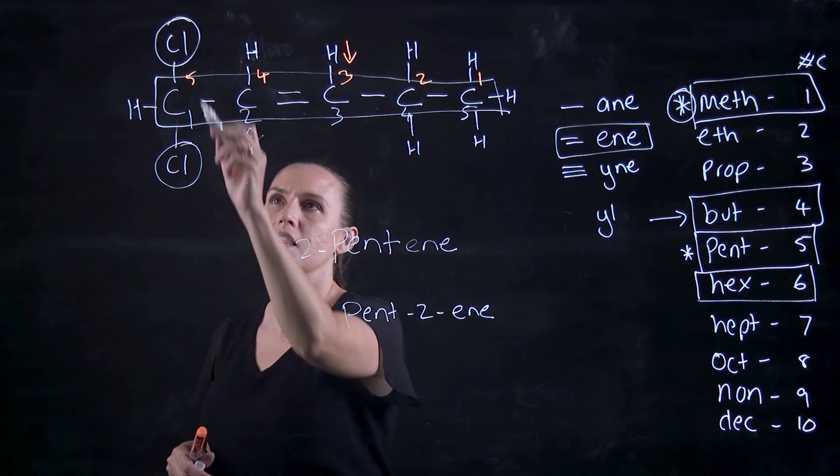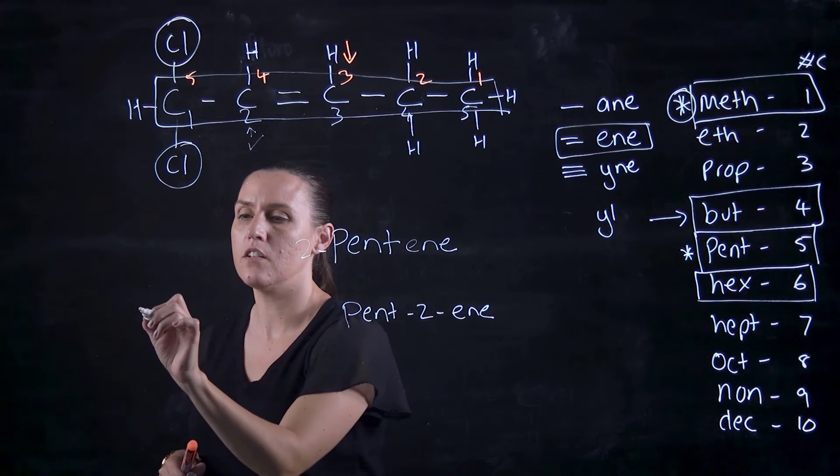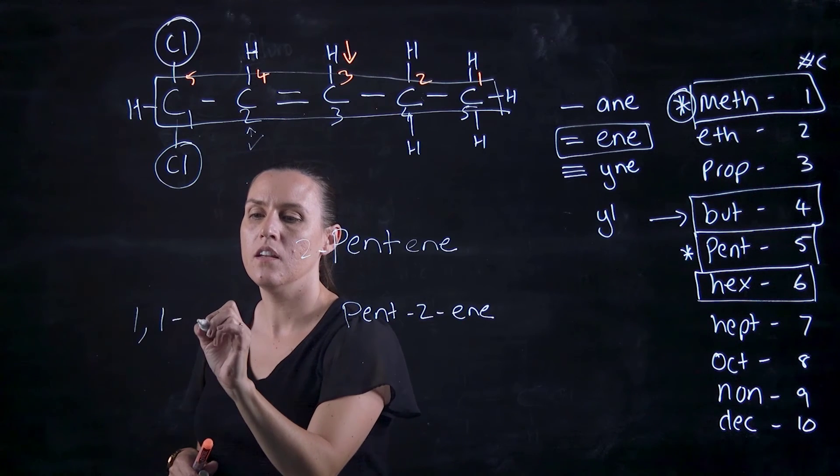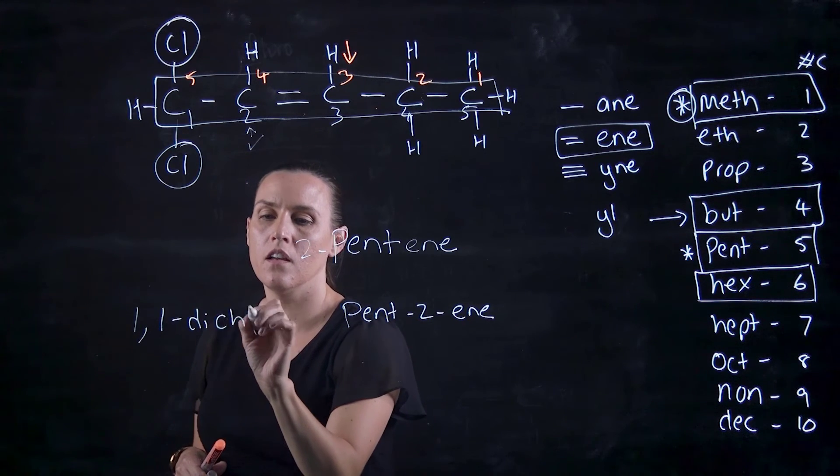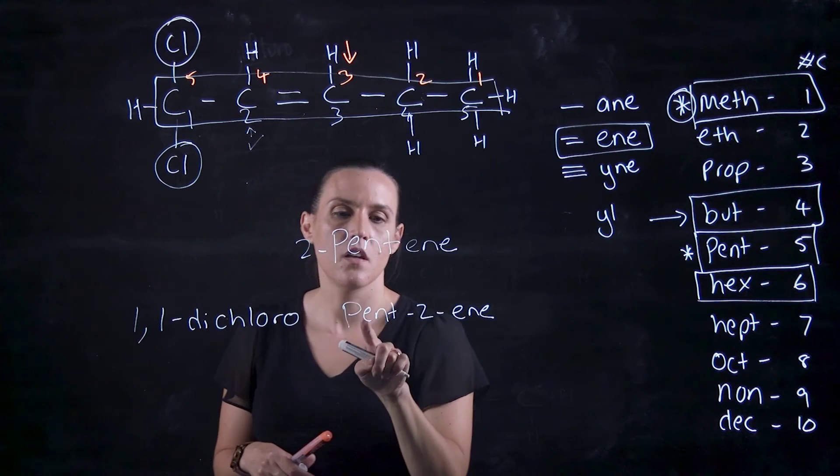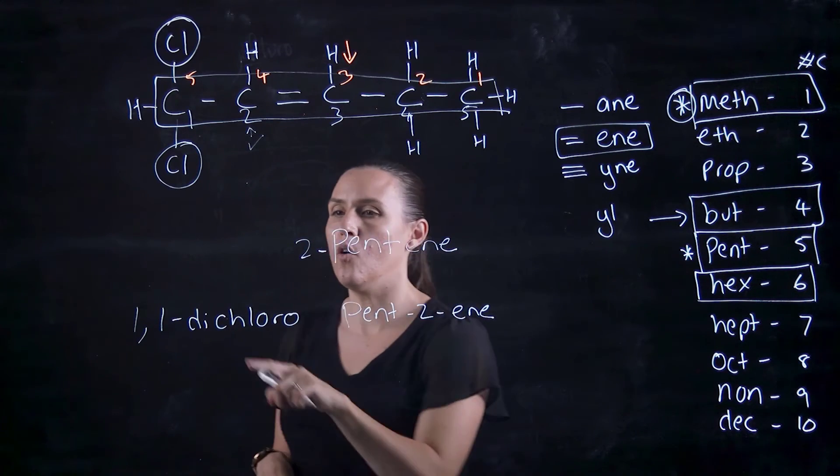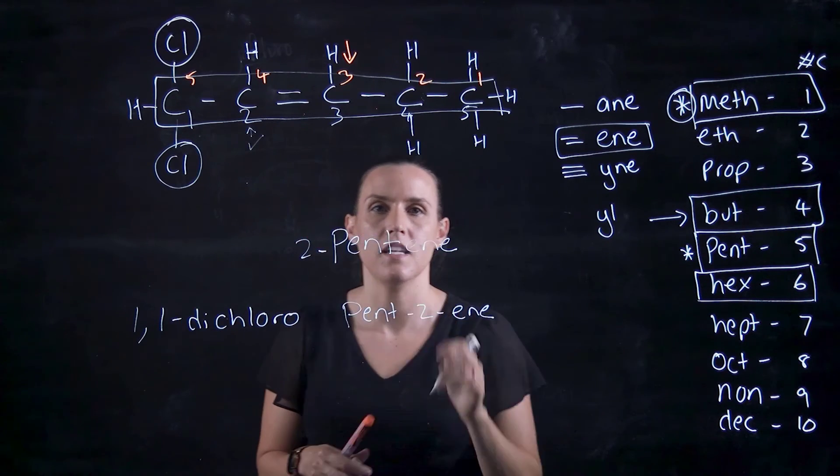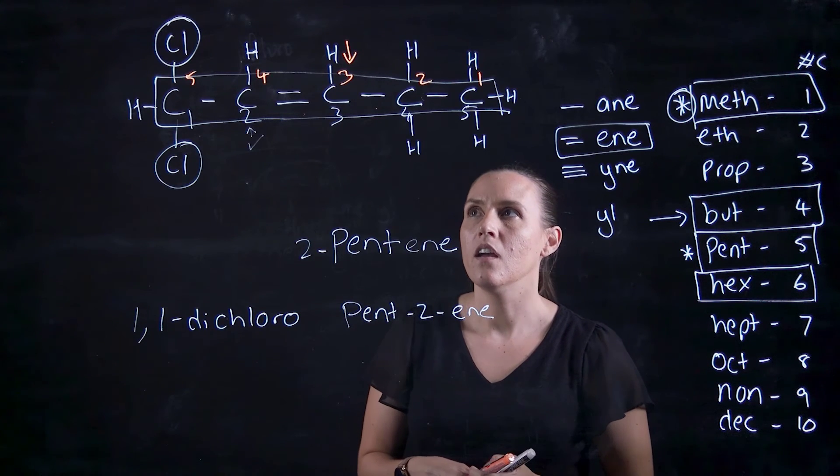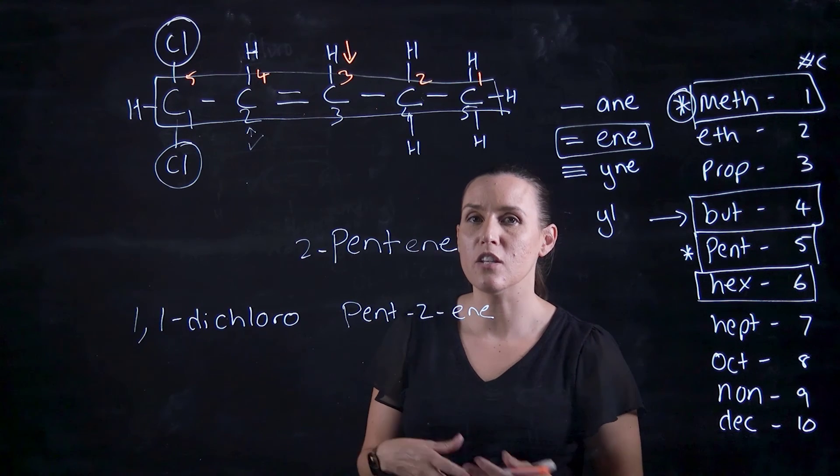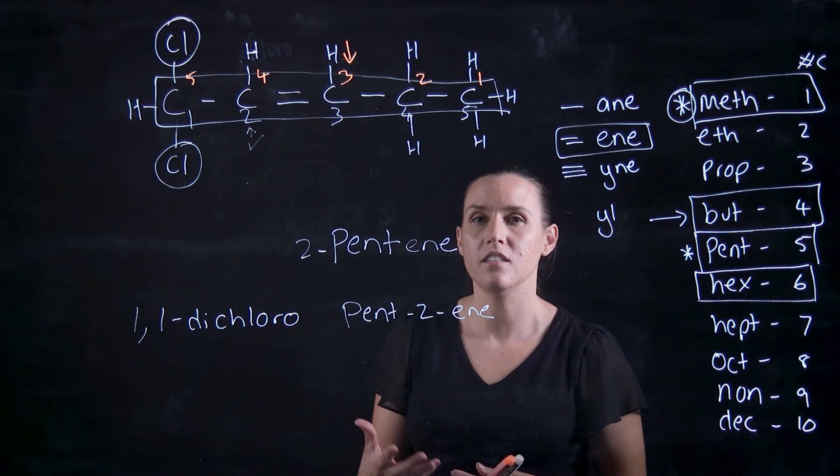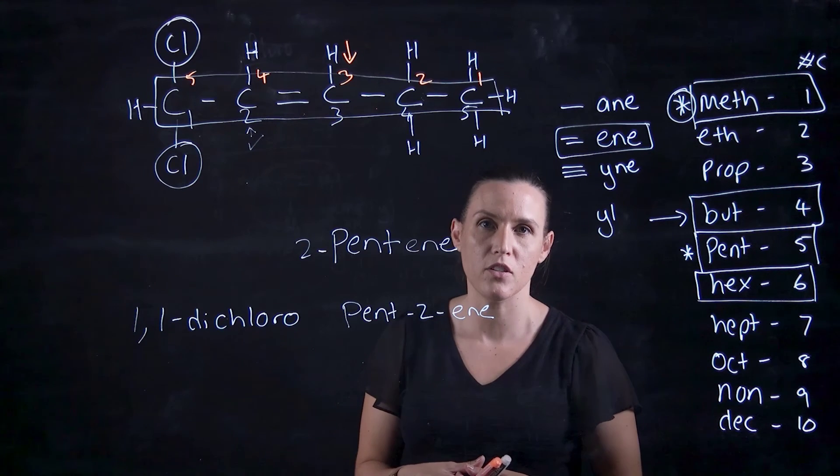So that means that these two chlorines are on carbon one. So it'd be 1, 1, 1-dichloropent-2-ene or 1, 1-dichloro-2-pent-ene for that particular example. Okay, so hopefully that's given you a little bit of help in starting the nomenclature problems that you might have in your course.